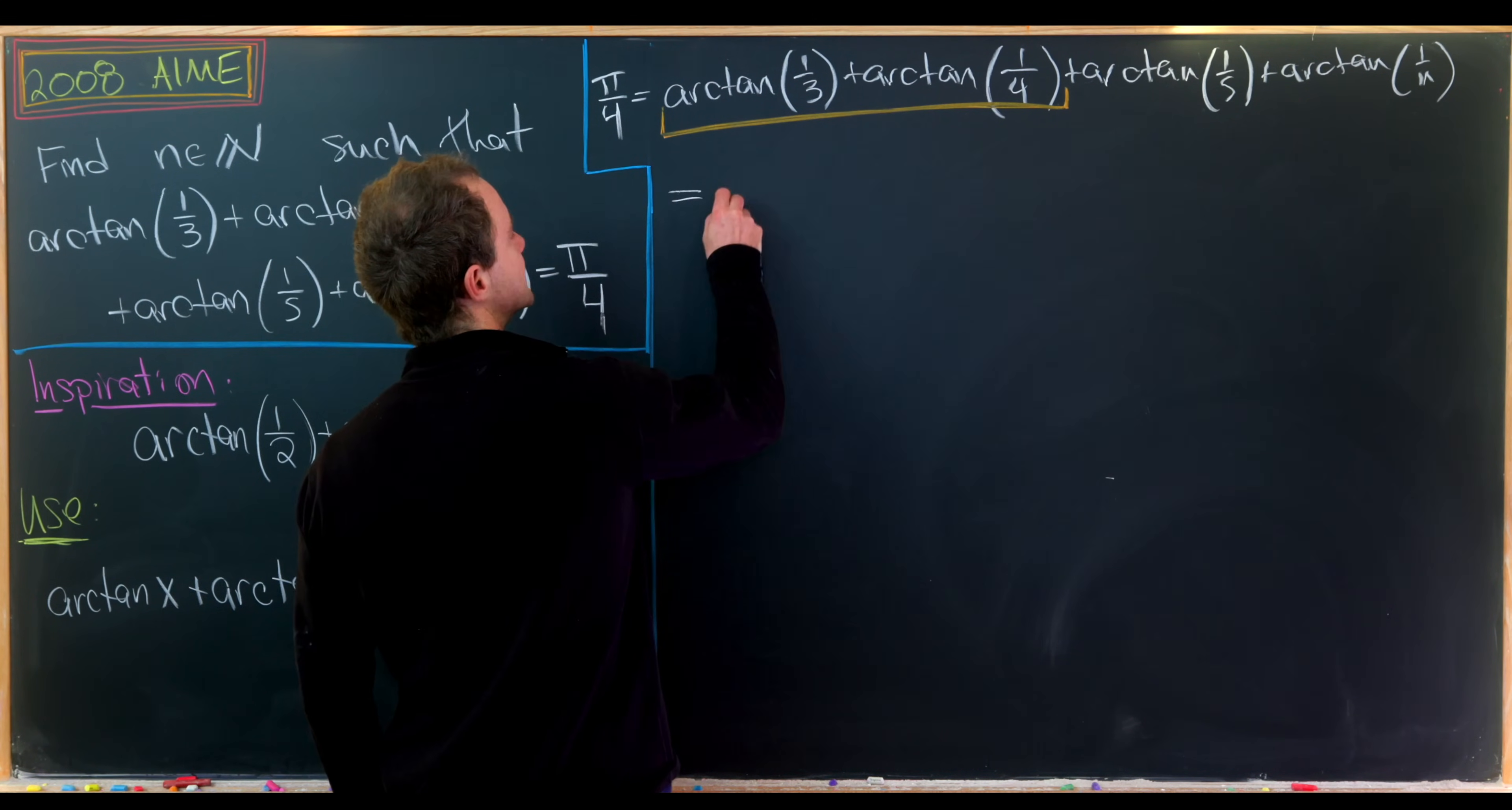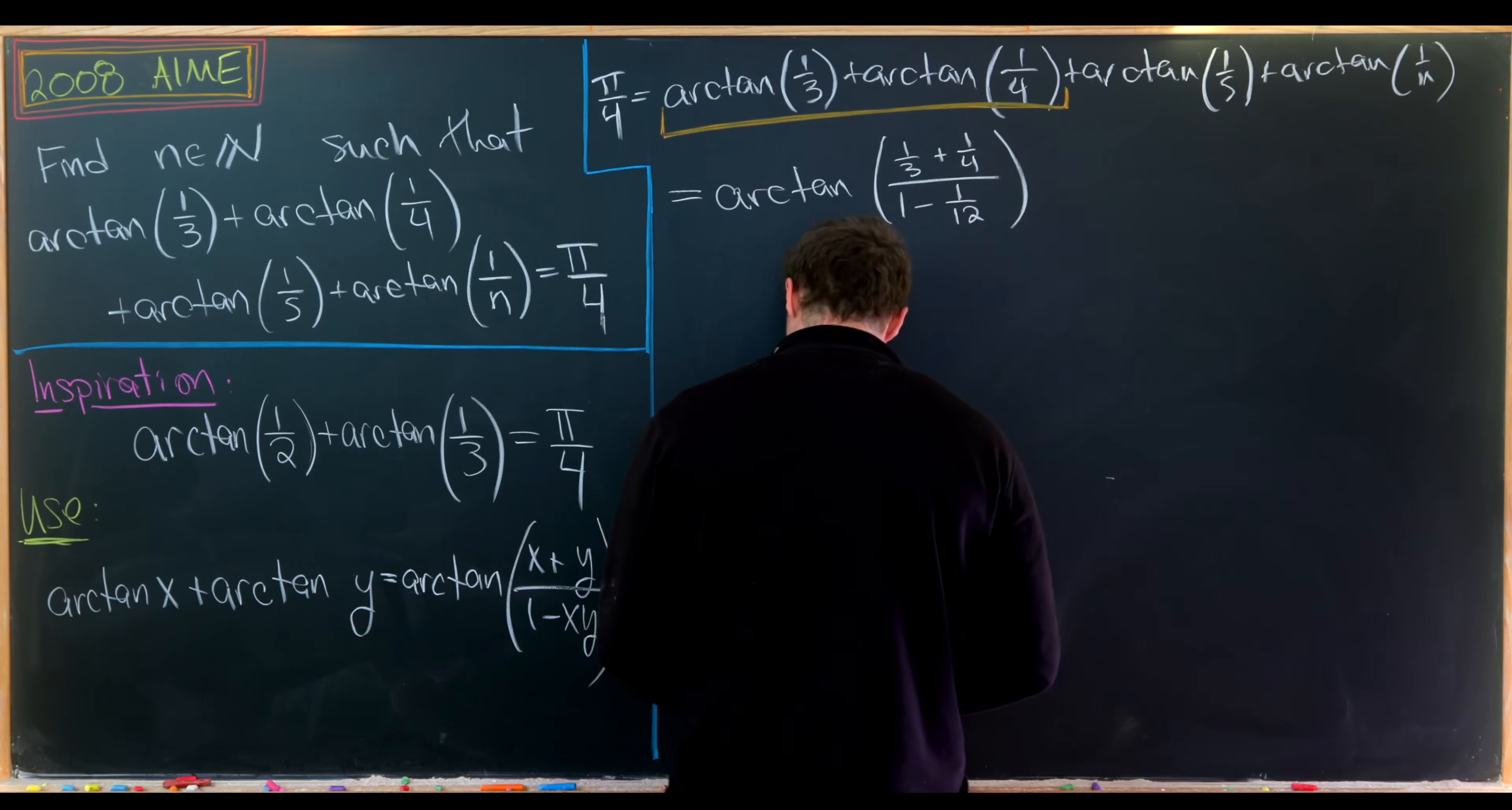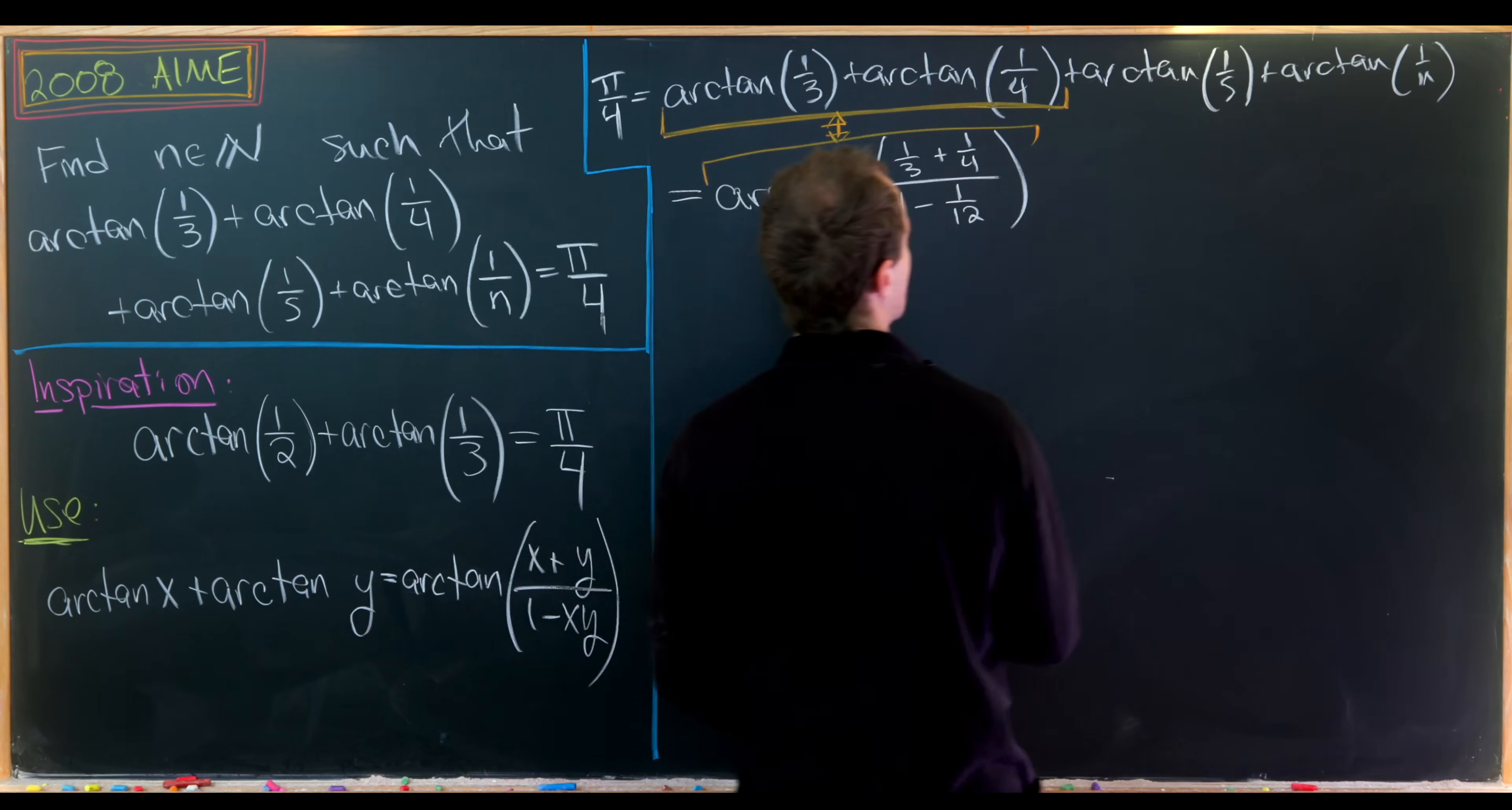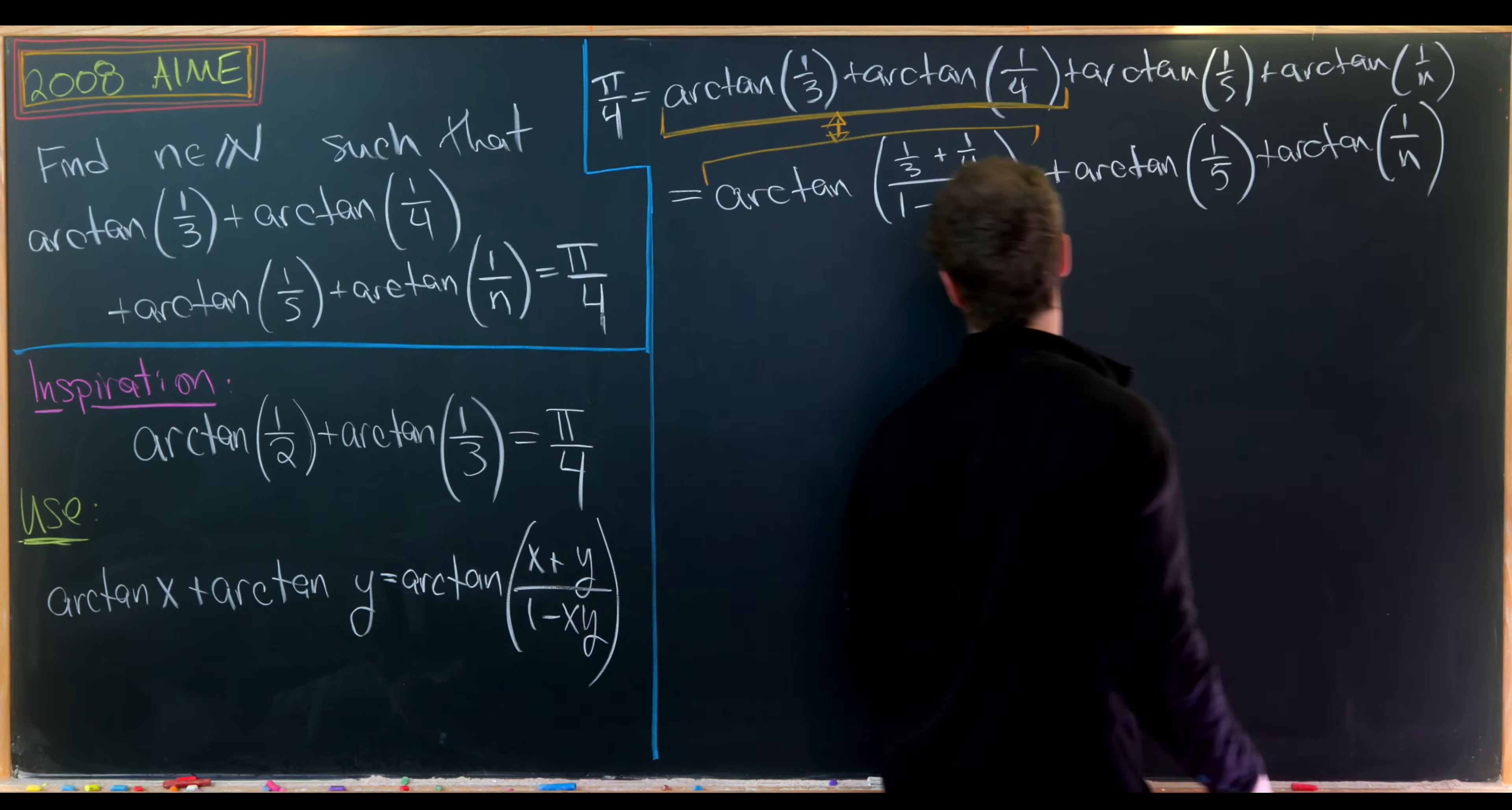Pairing these two will give us arctan((1/3 + 1/4)/(1 - 1/12)). That's simply from this sum formula right here. Then I'll bring down the rest: arctan(1/5) and arctan(1/n).